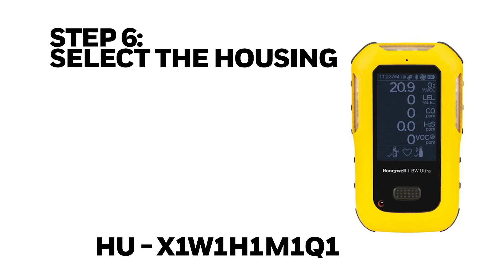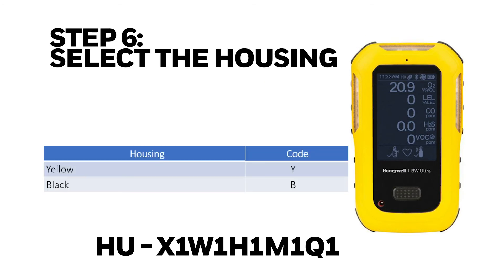Step 6: select the housing. After selecting all five sensors we will go to step 6 where we select the housing. We have two types of housing: yellow with the code Y, and black with the code V. In this case I want a BW-Ultra with a yellow housing, so I'm going to select Y.